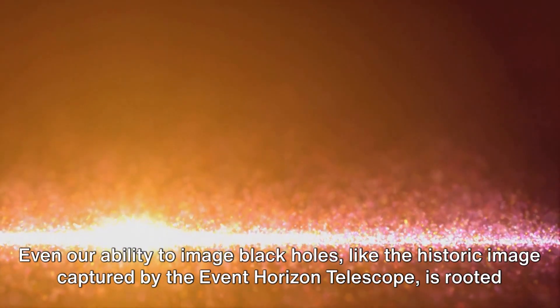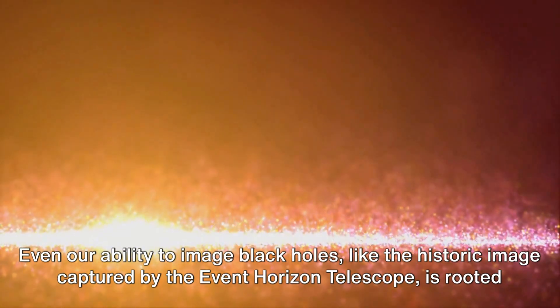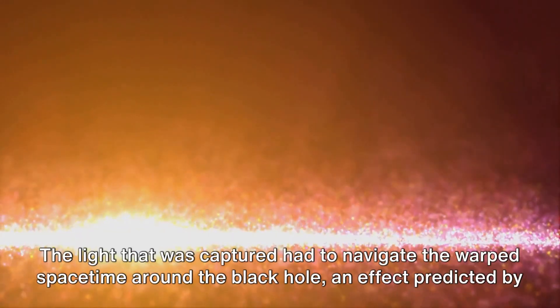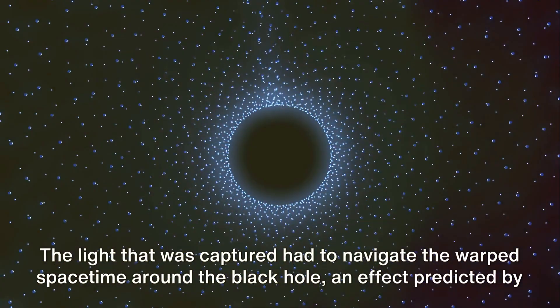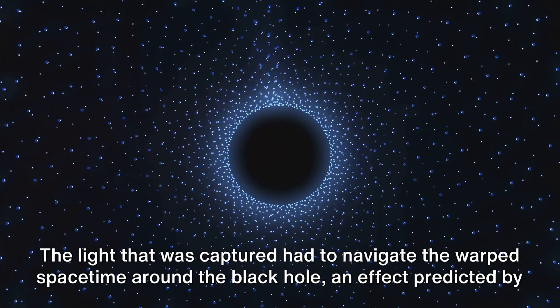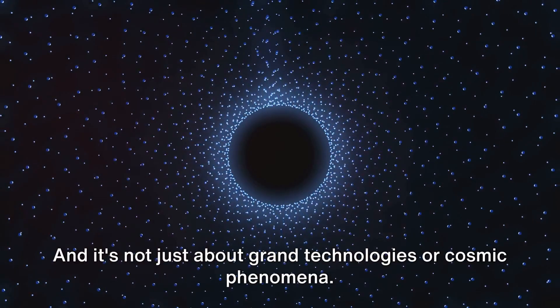Even our ability to image black holes, like the historic image captured by the Event Horizon Telescope, is rooted in the general theory of relativity. The light that was captured had to navigate the warped space-time around the black hole, an effect predicted by Einstein's field equations.